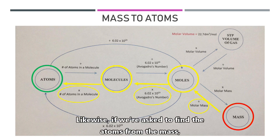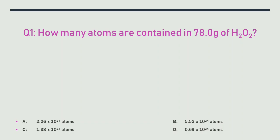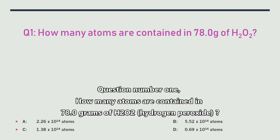Likewise, if we are asked to find the atoms from the mass, it will be a long trip. Let's look at an example. Question number one: how many atoms are contained in 78.0 grams of H₂O₂, hydrogen peroxide?